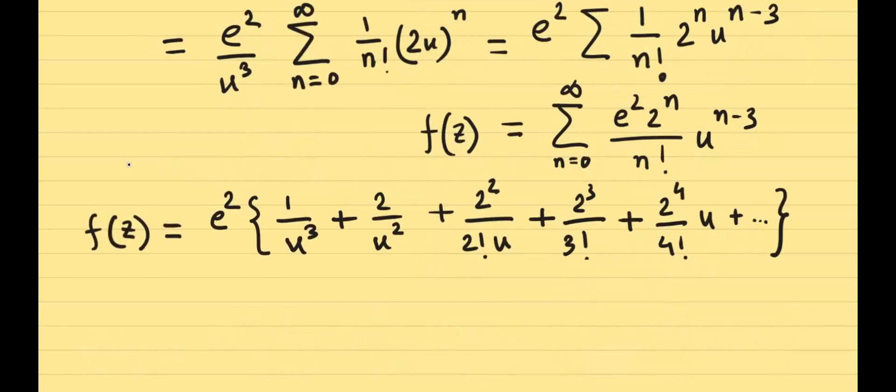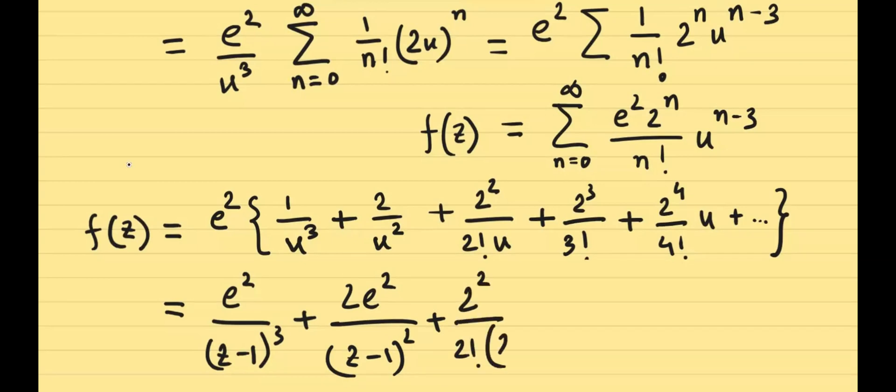Now at this stage, we can substitute z minus 1 instead of u. So what do we find is e squared divided by (z minus 1) cubed, plus 2 e squared divided by (z minus 1) squared, plus 2 squared divided by 2 factorial times (z minus 1), plus 2 cubed divided by 3 factorial, plus 2 to the power 4 divided by 4 factorial times (z minus 1), and so on and so forth.